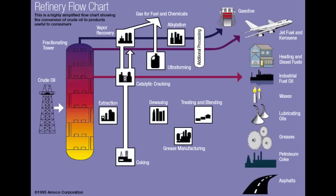As we go down the distillation column, we are now into the vacuum distillation section. Vacuum distillation goes through extraction, de-waxing, and various treating and blending steps to produce lubricating oils, as well as waxes and greases.